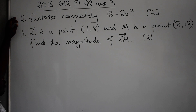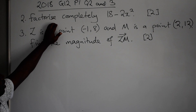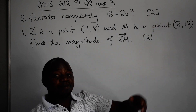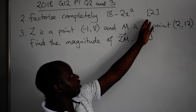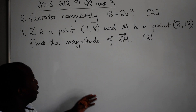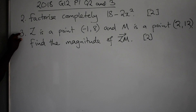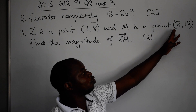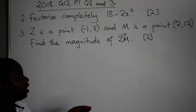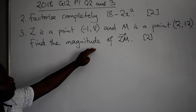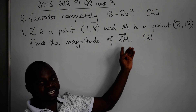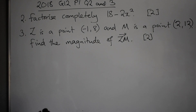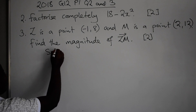Question number two was: factorize completely 18 minus 2x squared. The number of marks given: 2. Then we have number three. Z is a point negative 1, 8 and M is a point 2, 12. The question is find the magnitude of the vector ZM. Number of marks: 2. Let's see how best you can answer such kind of questions.